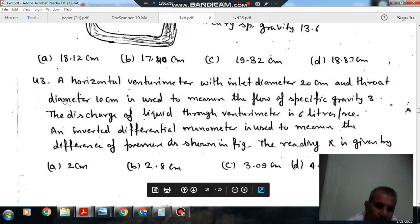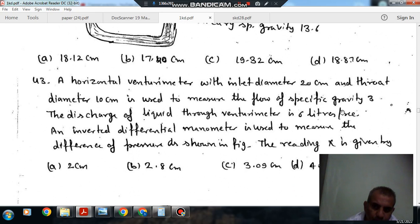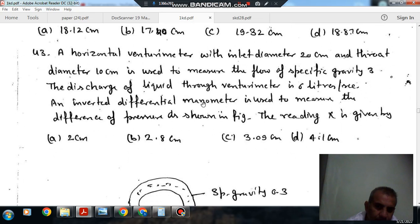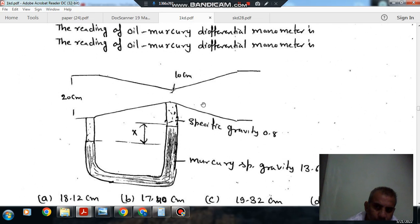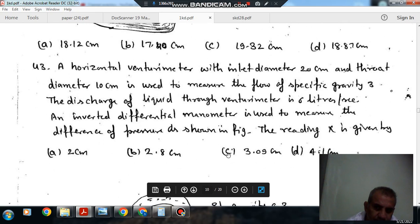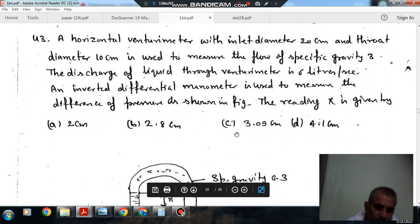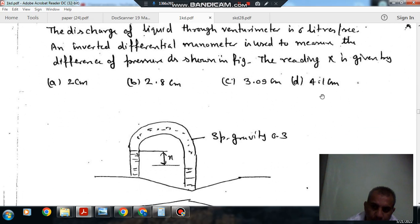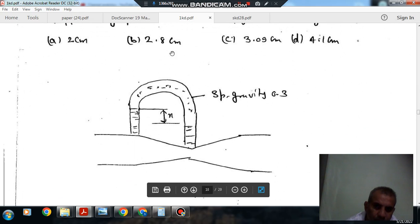Next, a horizontal venturimeter with inlet diameter 20 centimeter and throat diameter 10 centimeter is used to measure the flow of oil of specific gravity 0.8. The discharge of the liquid through venturimeter is 6 liter per second. An inverted U-tube manometer containing mercury to measure the difference of pressure. The reading x is given by option A 2 centimeter, option B 2.8 centimeter, option C 3.09 centimeters, and option D 4.109 centimeter.